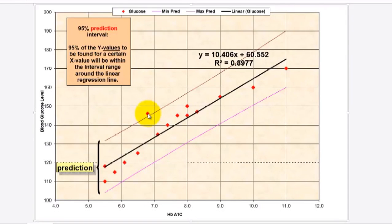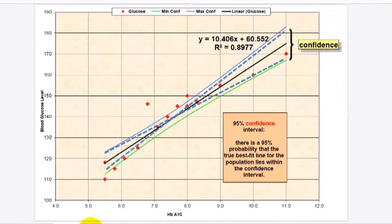You could also find the confidence intervals. That range is always much narrower, and all it says is there is a 95% probability that the true best fit line for the population lies within those intervals. So it could be this dotted line or that dotted line. They all are possible with 95% confidence.